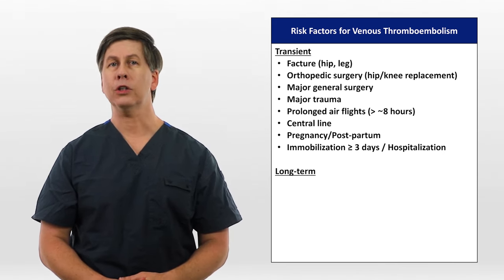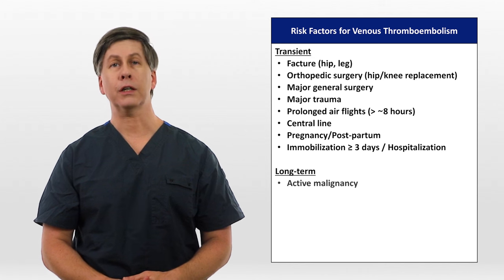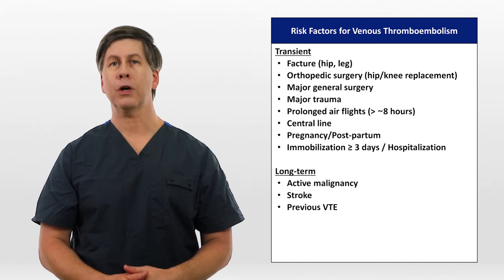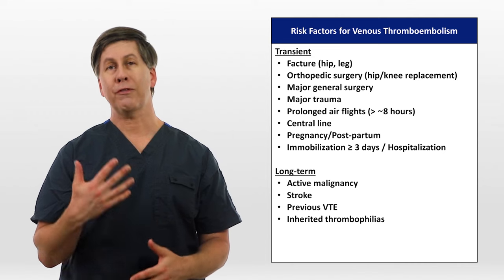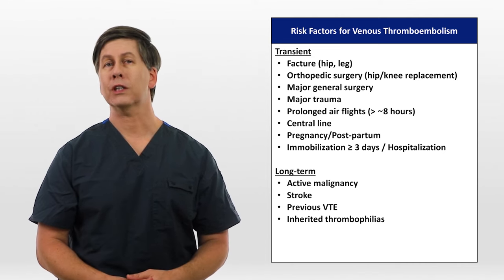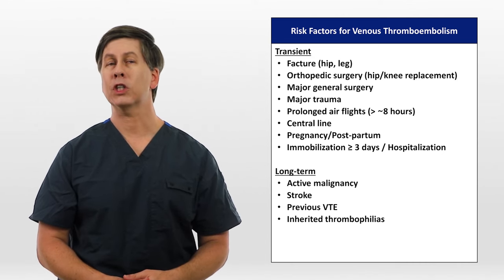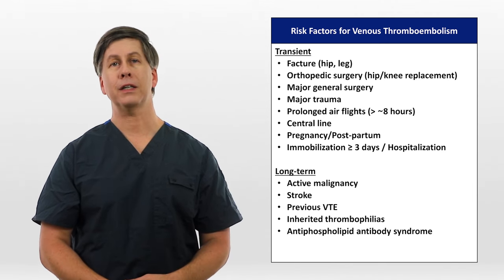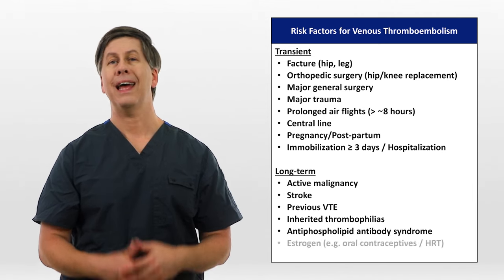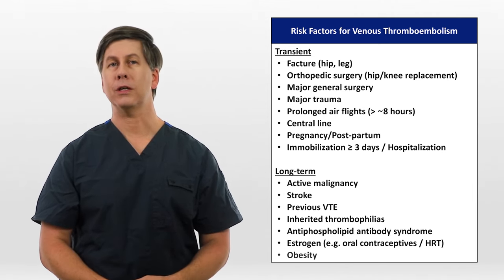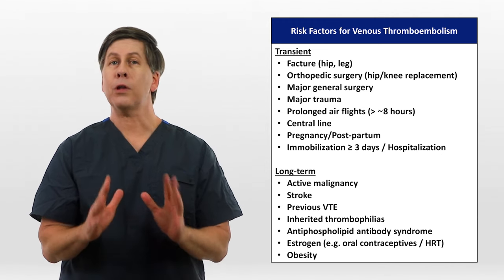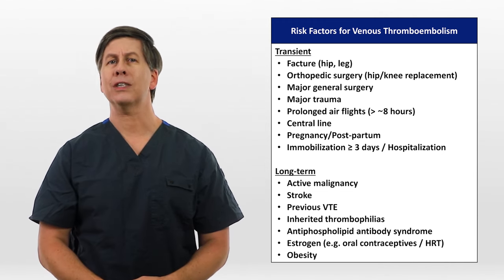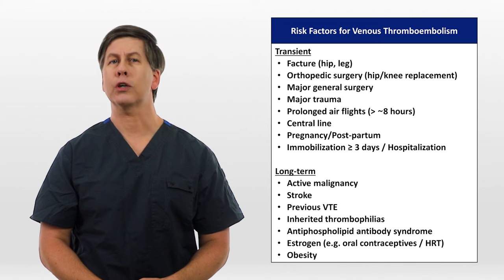More long-term risk factors include active malignancy, stroke, previous venous thromboembolism, inherited thrombophilias with a magnitude of risk dependent upon the specific genetic abnormality, antiphospholipid antibody syndrome, estrogen therapy, and obesity. This list is not complete, but these are the risk factors for which their significance has the strongest consensus.